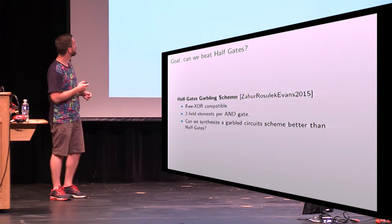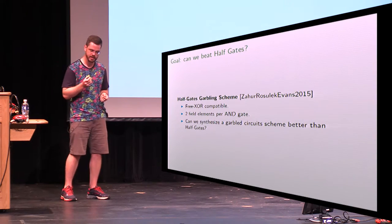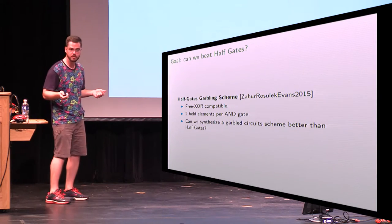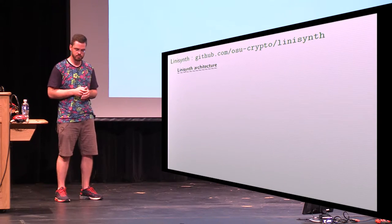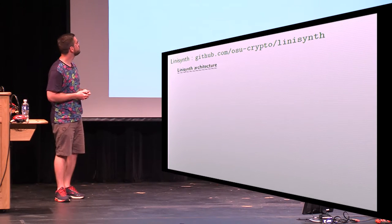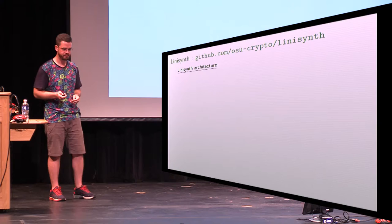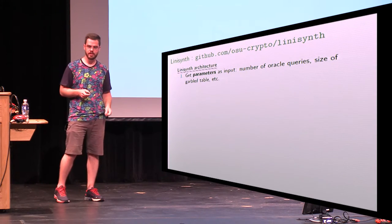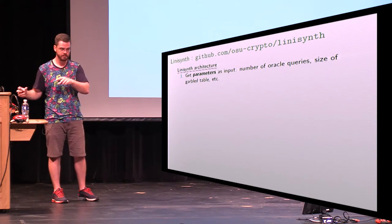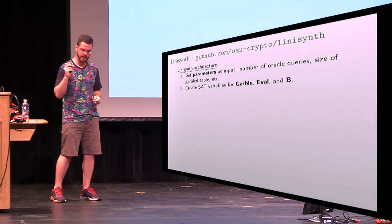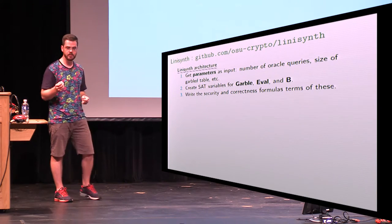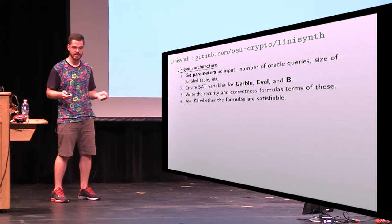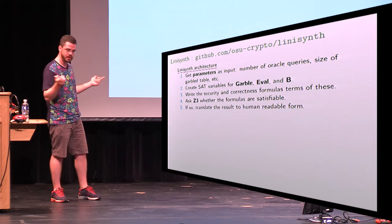We were trying to beat half-gates — wondering if we could beat this optimization showing you need at least two ciphertexts to garble an AND gate. We implemented it in Python using the Z3 SAT solver, running on a laptop, available freely at a provided URL. You give it parameters representing the size of the garbled table and the number of oracle queries, which determine the matrix sizes. We create SAT variables for every element inside those matrices, write the security and correctness formulas in terms of these matrices of SAT variables, give everything to the SAT solver, and if satisfiable, translate it into human-readable form.